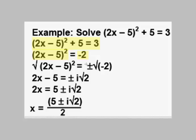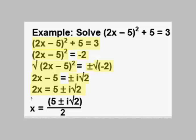Now we extract square roots, which essentially means taking the square root of both sides. We square root the left side, which cancels out the squared, and we square root the right side, but we also include a plus and minus to account for the negative solution, because a negative squared will square out to a positive amount. We get 2x minus 5 equals plus or minus the square root of negative 2. The square root of negative 2 is a complex value: i times the square root of 2, where i is the square root of negative 1. We add 5 to both sides, giving us 2x equals 5 plus or minus i√2, then divide both sides by 2, and we get x equals (5 ± i√2) / 2.